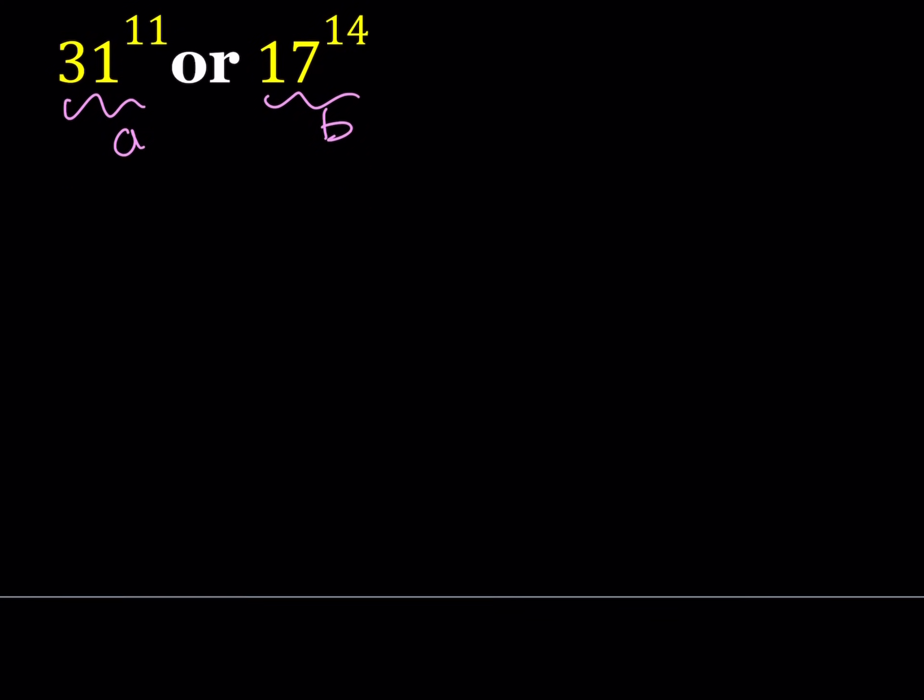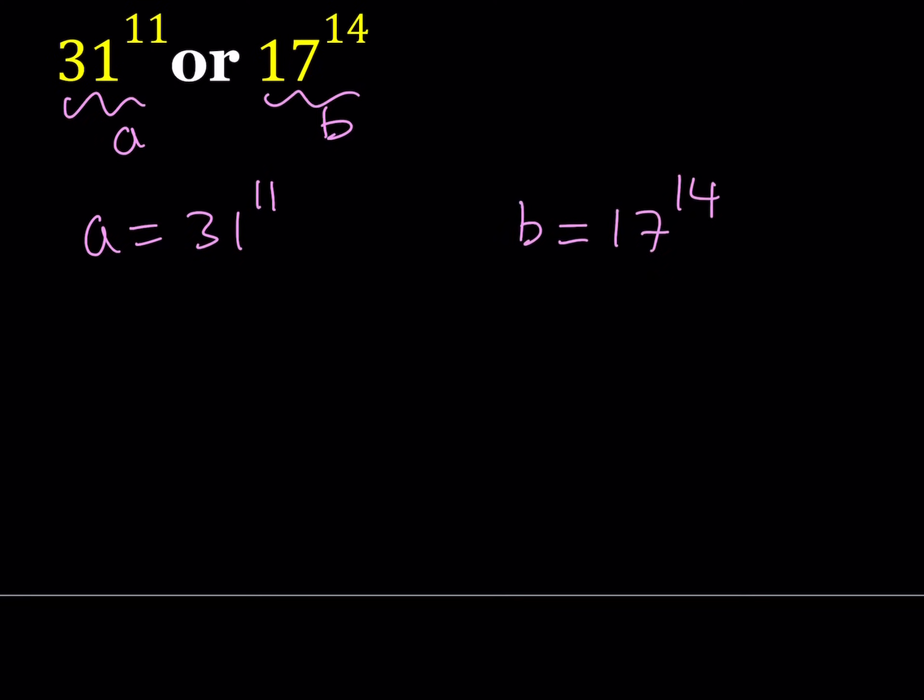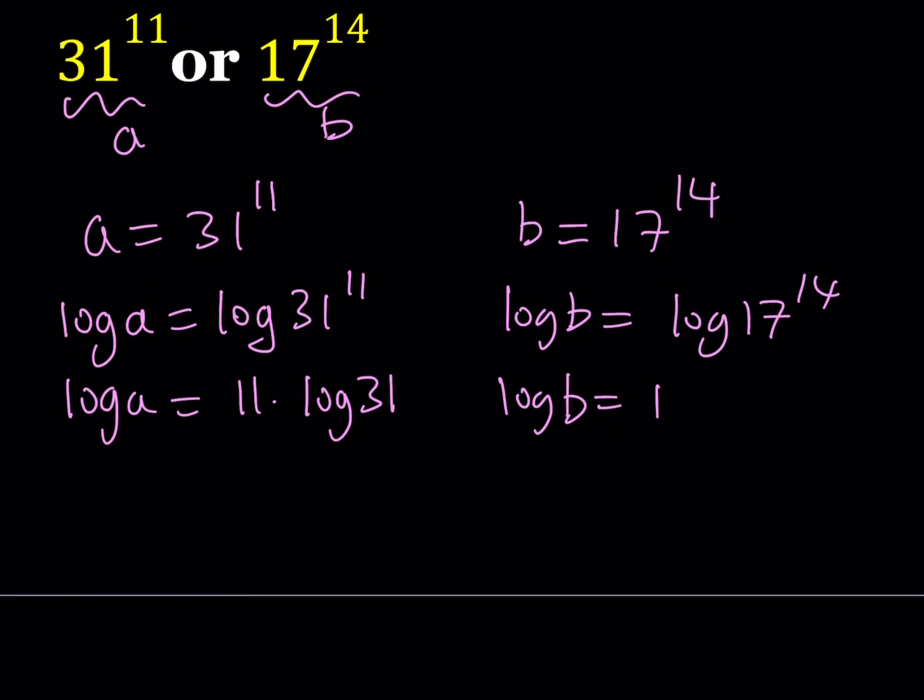And let's go ahead and take a look at what this gives us. So, A equals 31 to the 11th power and B equals 17 to the 14th power. Now I'm going to be logging both sides since these are exponentials and I can get rid of the exponents easily. And using the power property, I can write this as 11 times log 31.